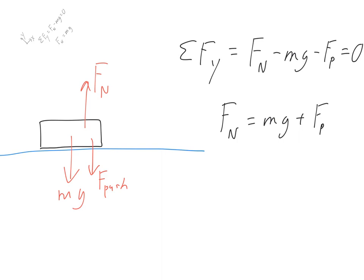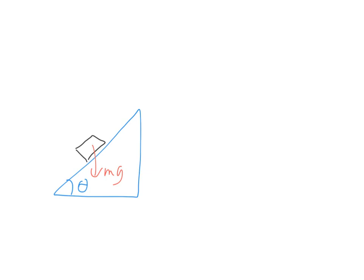So we can see generally how we want to figure this out: look at the sum of the forces in the y direction, where the y direction is parallel to the direction of the normal force. Let's go with one more example — the inclined plane. Here the force of gravity, the weight, is straight down, while the normal force has to be perpendicular to the surface. So in this case the forces are not exactly in opposite directions of each other. We can see that the force of gravity is going to be at an angle from the direction of the normal force.